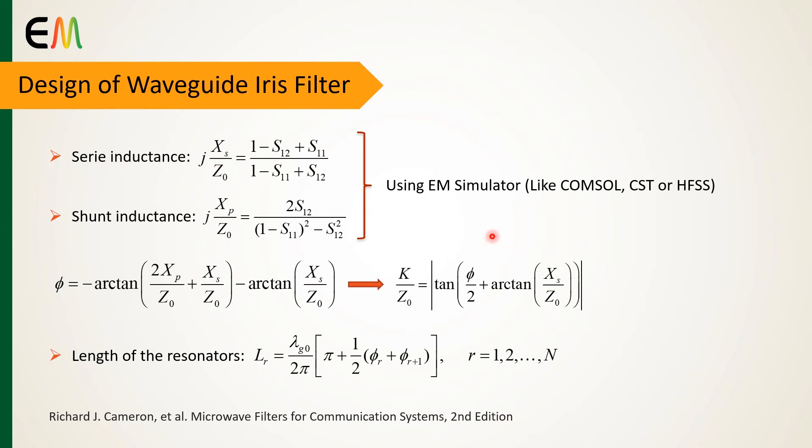Using an electromagnetic simulator, the scattering parameters of each iris can be calculated. Then Xs and Xp, based on the scattering parameters, are computed by these equations where S11 and S21 are the scattering parameters of the dominant TE10 mode. The φ parameter and then the inverter constants can be expressed as a function of Xs and Xp. Both Xp and Xs, and consequently K and φ, are functions of the iris widths.